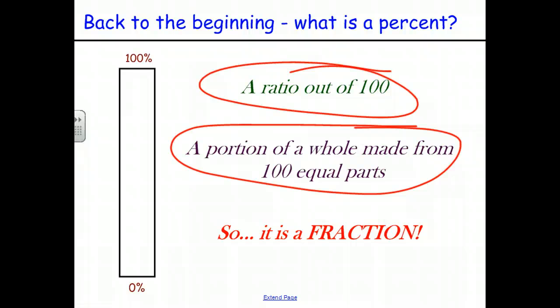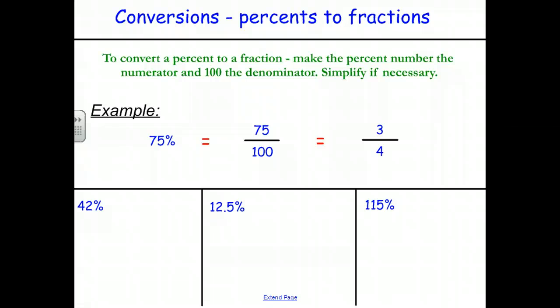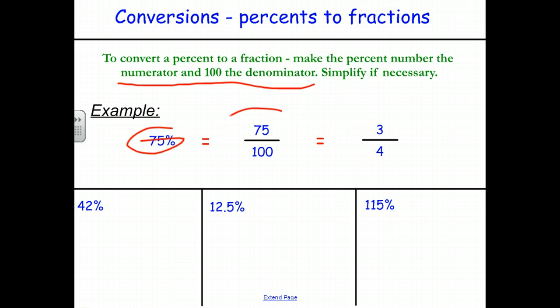Because it is a portion of a whole made up from 100 equal parts, we can convert between percents, fractions, and decimals. Converting a percent to a fraction is something we've actually been doing while solving percents without knowing it. To convert a percent to a fraction, all we do is make the percent number — in this case 75 — the numerator, and 100 the denominator.